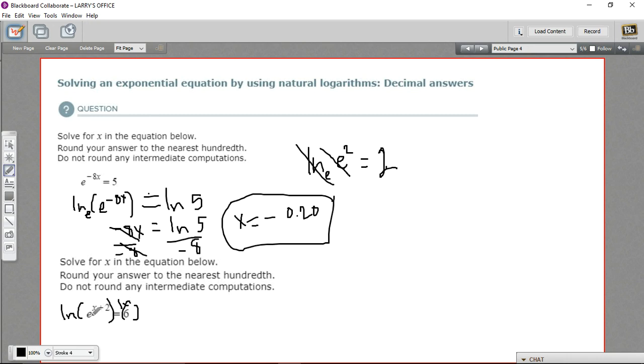On this side, the natural log and the e cancel out. I'm just going to get left with x plus 2. And on the other side, we're going to have the natural log of 6. To solve for x now, all I have to do is subtract 2 from both sides. So I get x equals the natural log of 6 minus 2.